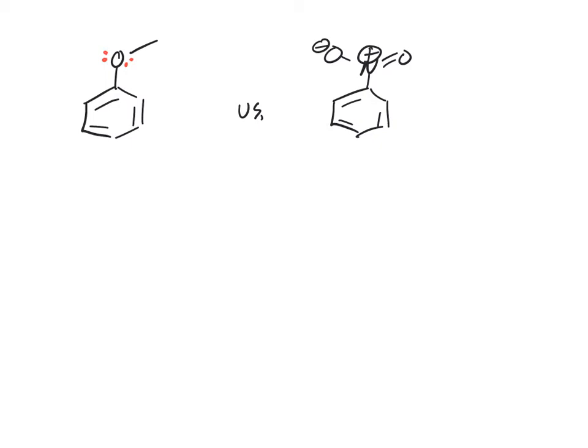So we call these groups, this is called an activator, this is called a deactivator. One group puts electrons into the ring, makes the ring more reactive, a better nucleophile. One group takes away electrons from the ring, makes it less reactive, it deactivates it, makes it a worse nucleophile.